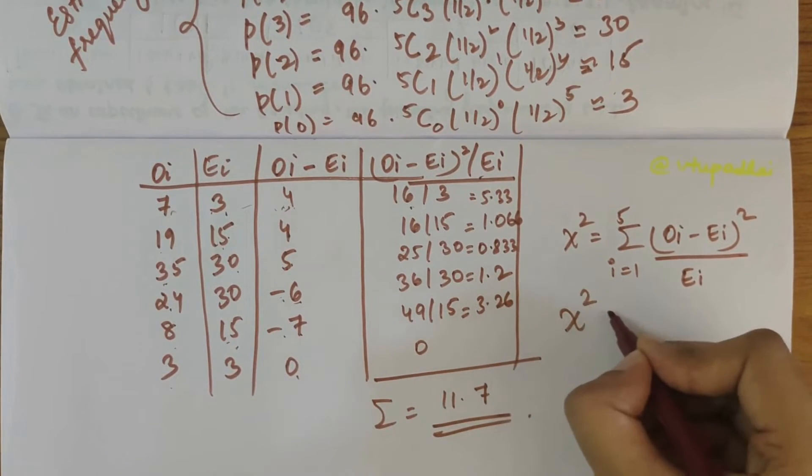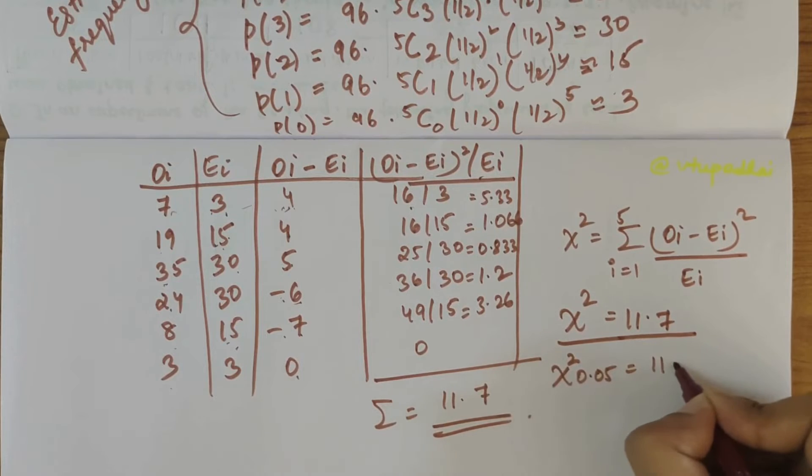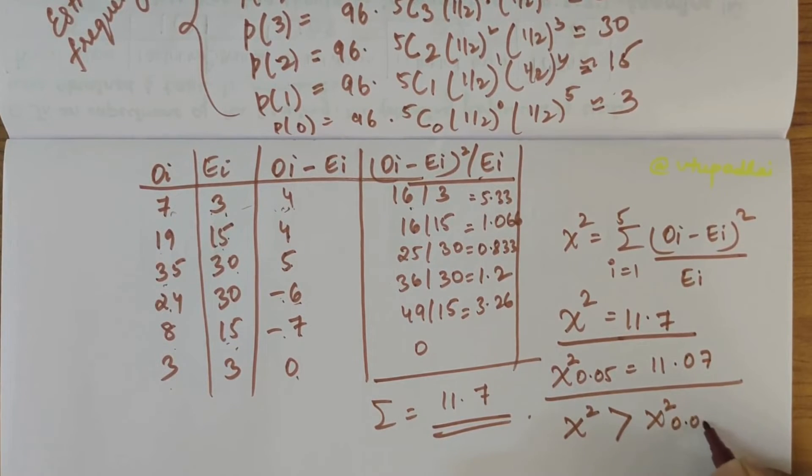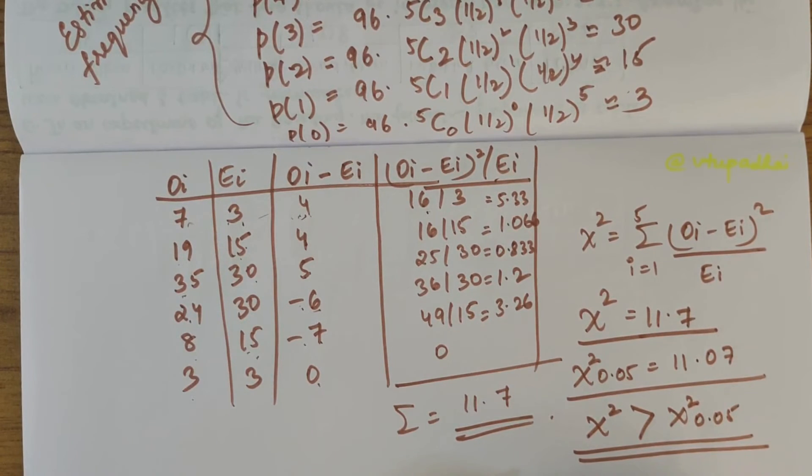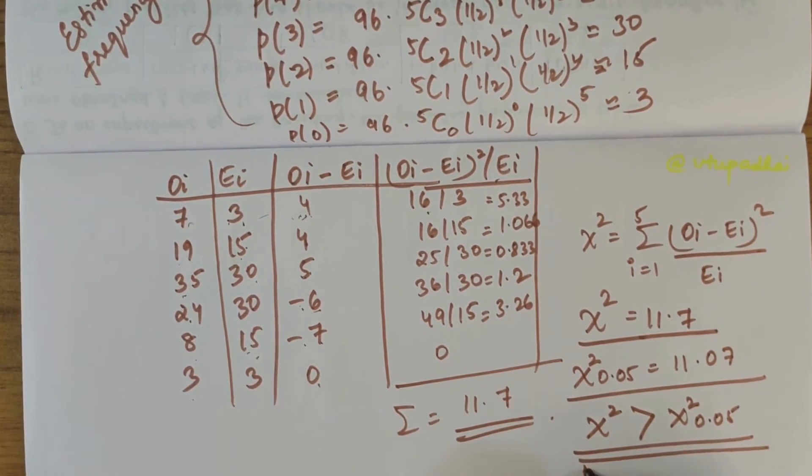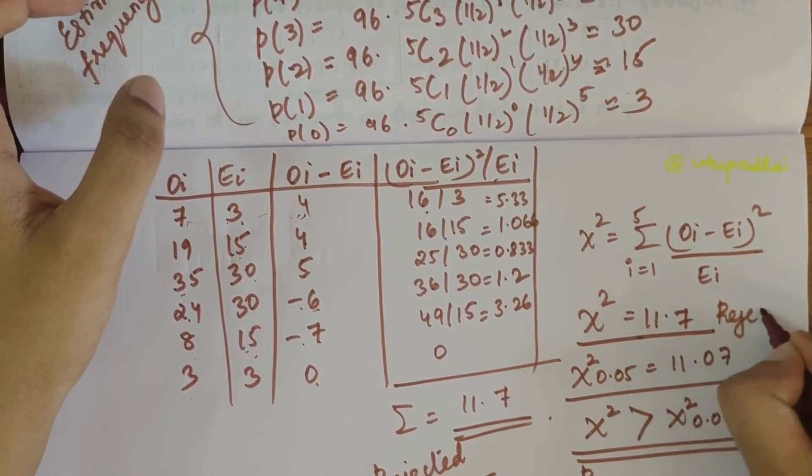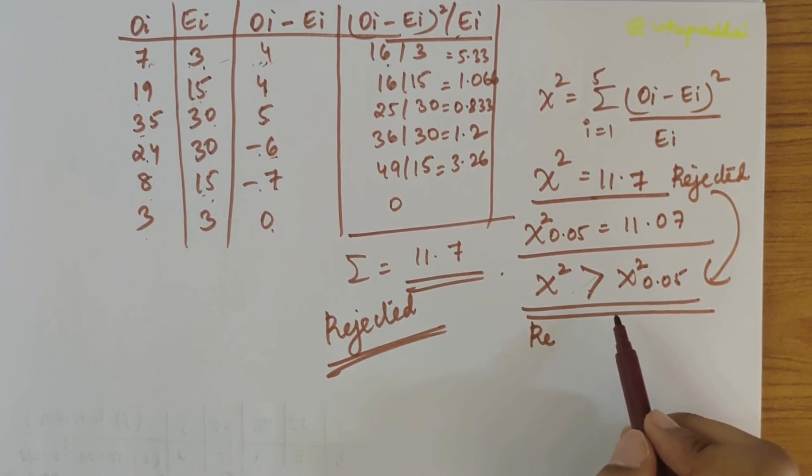The chi-square value is 11.7, and they had told that chi-square of 0.05 is equal to 11.07. We can see that chi-square value is greater than chi-square of 0.05, which is the 5 percent level of significance. When this condition appears, we can see that the hypothesis that the data follows binomial distribution is rejected. In order to accept the hypothesis, the condition is opposite to this—it has to be less than this, but here it is greater, so this hypothesis is rejected.